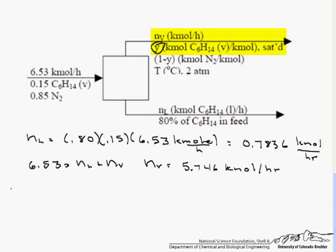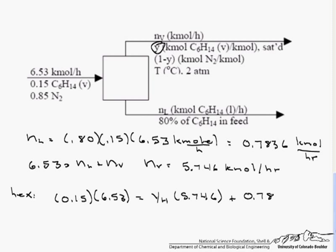So we do a hexane balance, and we find that 0.15 times 6.53, which is coming in, equals that y of hexane times 5.746, which is N sub V, plus our N sub L, which is pure hexane. So we solve for our y, which is 0.03409.